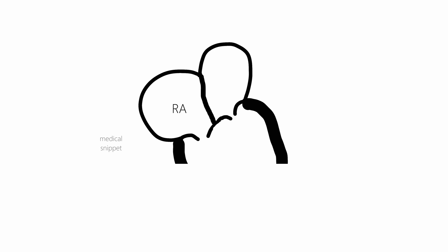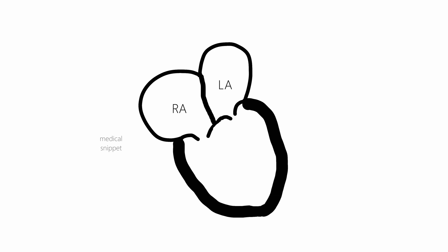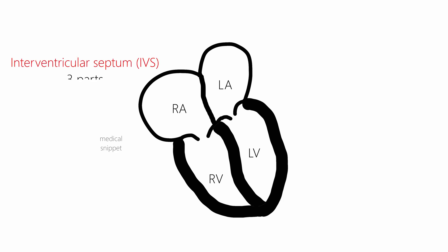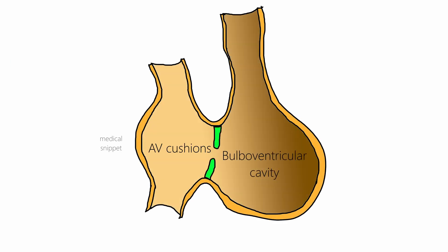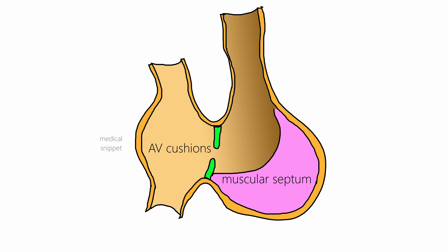Now let's discuss the development of the interventricular septum. The interventricular septum separates the right ventricle from the left ventricle. It consists of three parts: muscular, bulbar, and membranous. The muscular part of the interventricular septum grows from the floor of the bulboventricular cavity and divides the lower part of the ventricle into right and left halves.